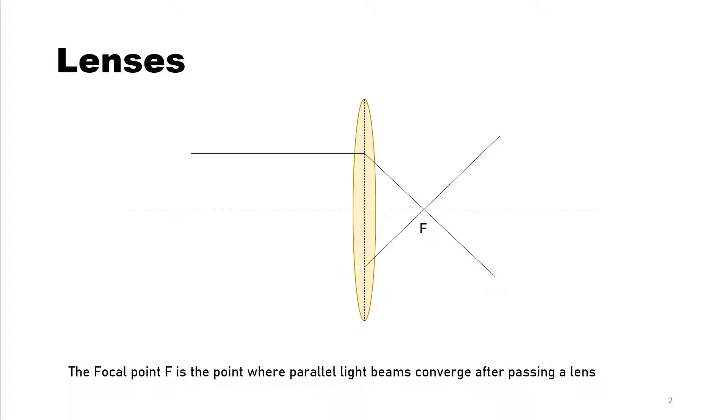A microscope consists of convex lenses, such as the one you can see in the picture here. And such a lens will focus incoming light to a single point, and that's the so-called focal point.